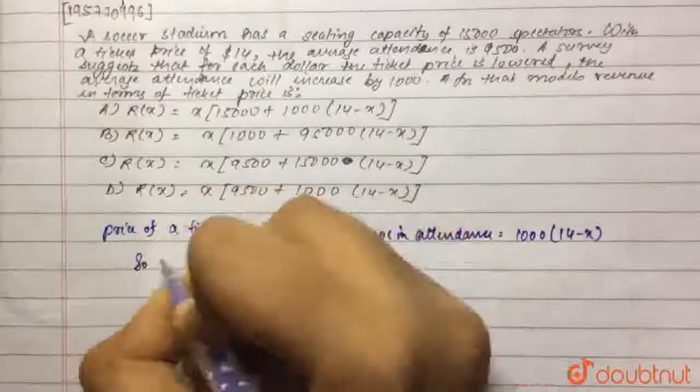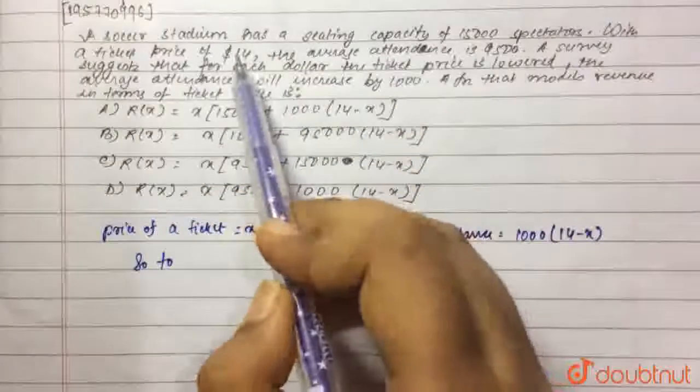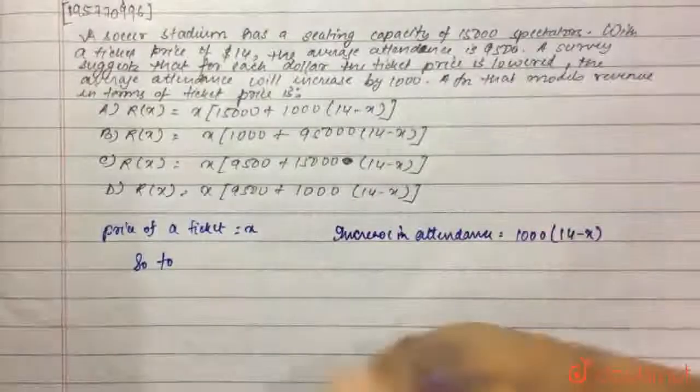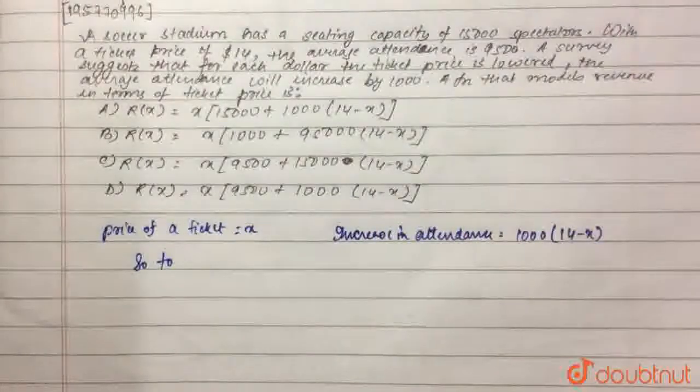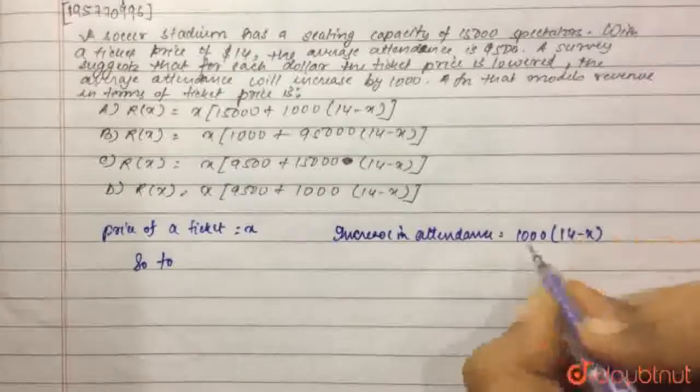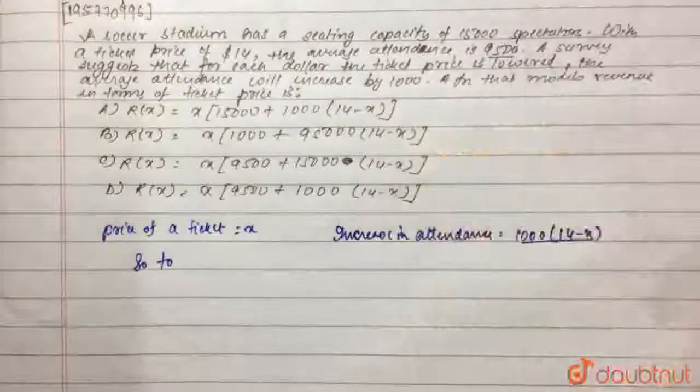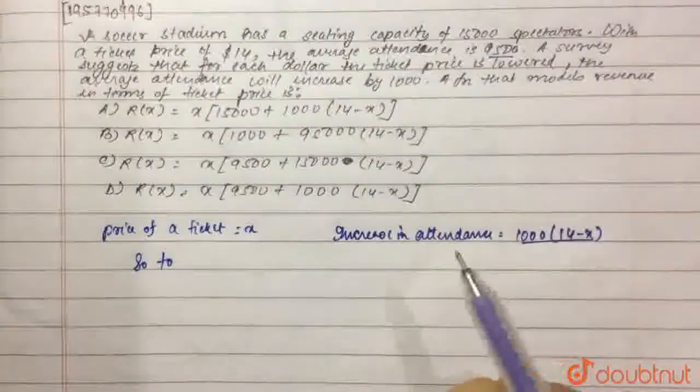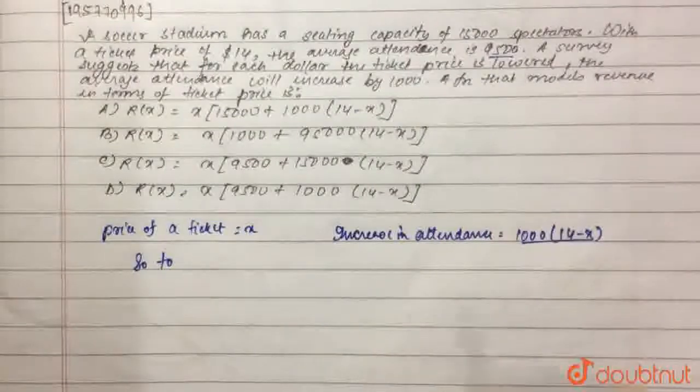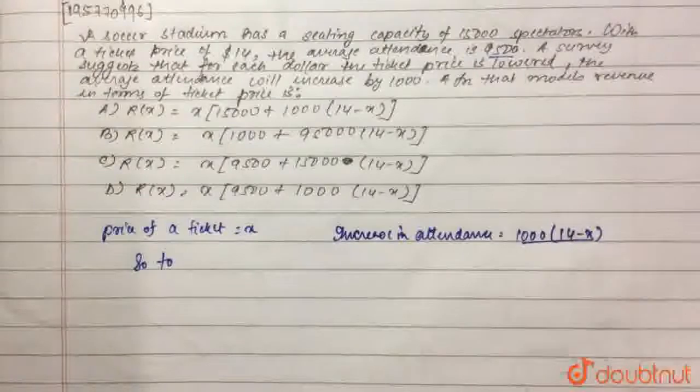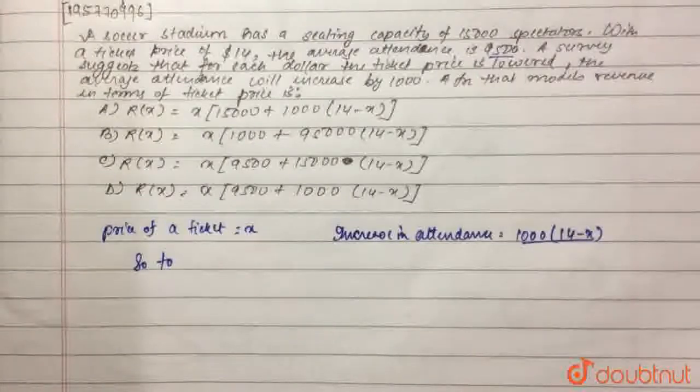So total number of people going to attend is initially for $14, it was 9,500. So for each dollar decrease after that, the additional 1,000 into 14 minus X will be added on to the initial 9,500. That means there will be 9,500 people already plus this number of people will be joining with each dollar decrease in the price of the ticket.